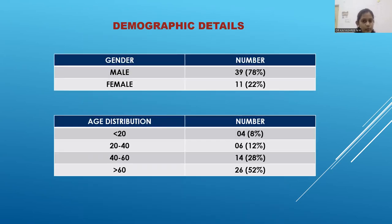Other demographic details: 78% of the population were male and 22% were female. 8% of cases belonged to less than 20 years of age, 12% to 20–40 years, 28% to 40–60 years, and 52% belonged to above 60 years of age.